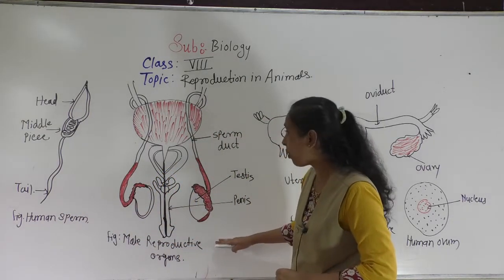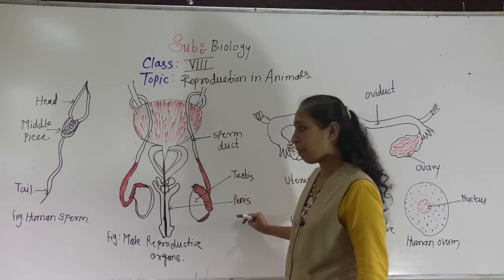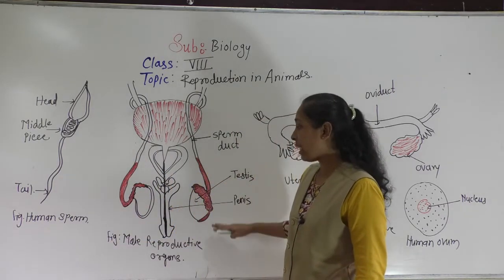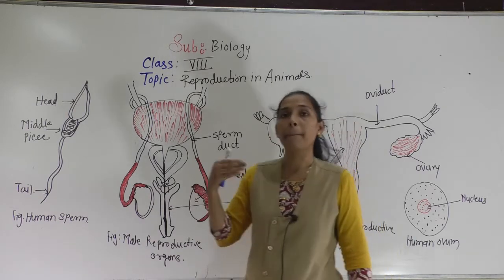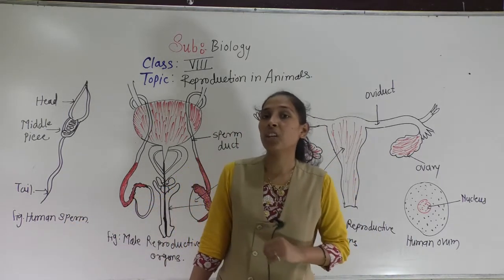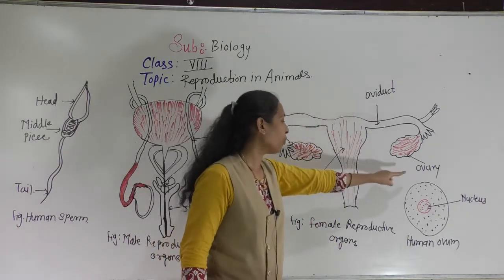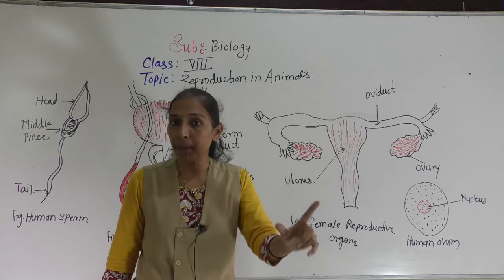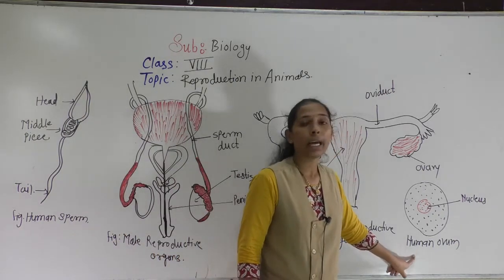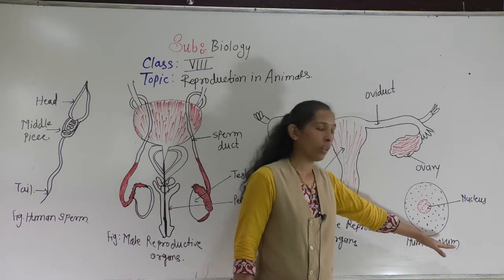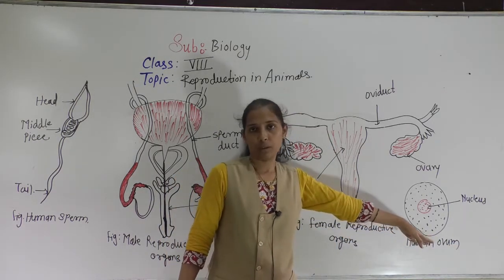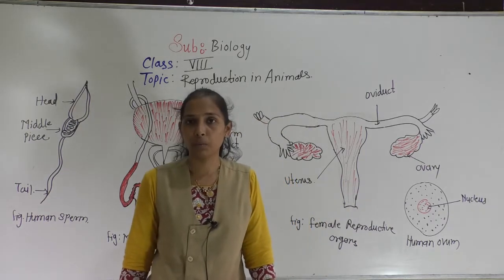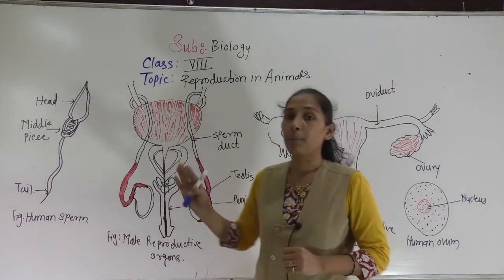To summarize: the male reproductive organs are two sperm ducts, a pair of testes, and the penis. The pair of testes produces the male gamete called sperm. The female reproductive organs are the oviduct, ovary, and uterus. The female gamete is called the egg, ova, or ovum — produced in the ovary. This is all about the male and female reproductive organs.